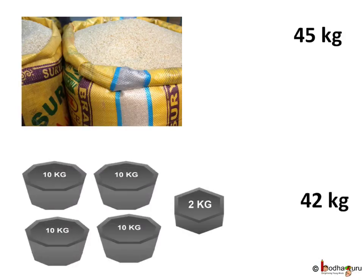So Rajan bought 45 kg of rice, but when he measured it he found that its weight is equal to only 4 ten-kg weights, which is 40 kg. So he was given 3 kg less rice by the shopkeeper, which is not good.